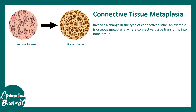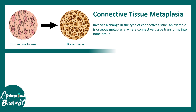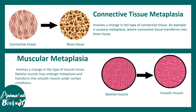There are other examples such as connective tissue metaplasia, where certain connective tissue gets converted into different tissue like bone tissue — also known as osseous metaplasia. There is also muscular metaplasia, where skeletal muscle may undergo metaplasia and transform into smooth muscle.